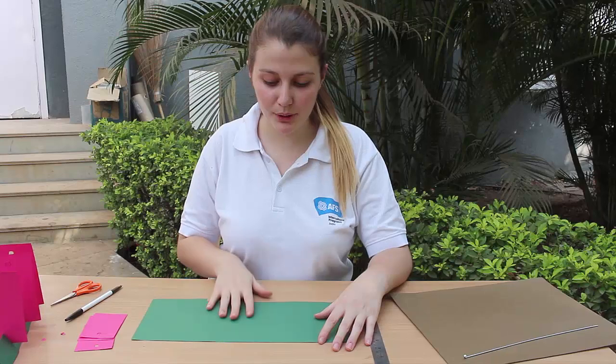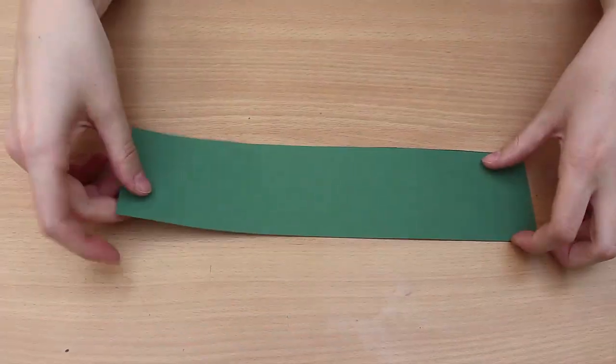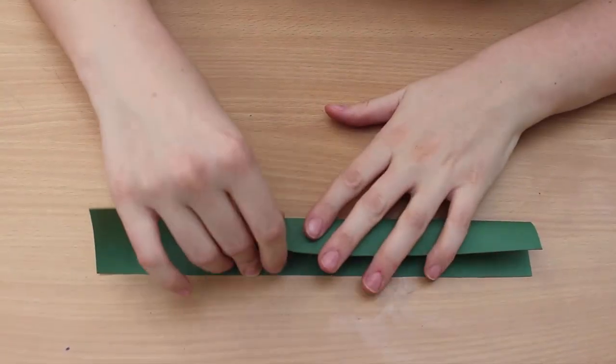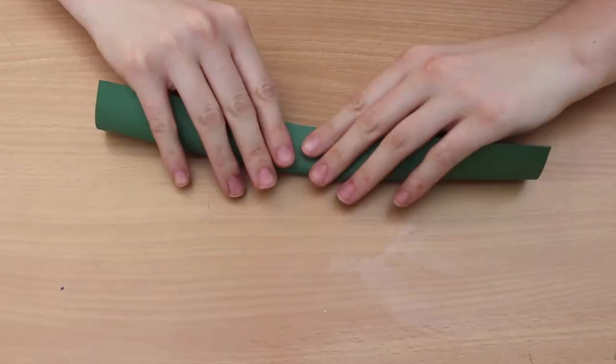Now that we've made the three cards, we're going to make the base. To make the base, start by cutting a strip of paper and then fold it in half.